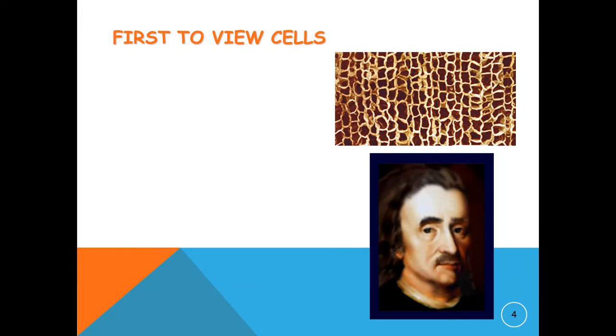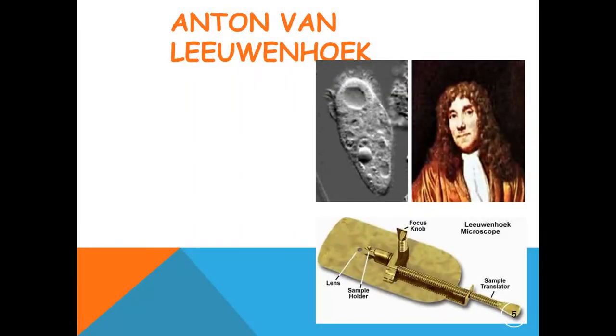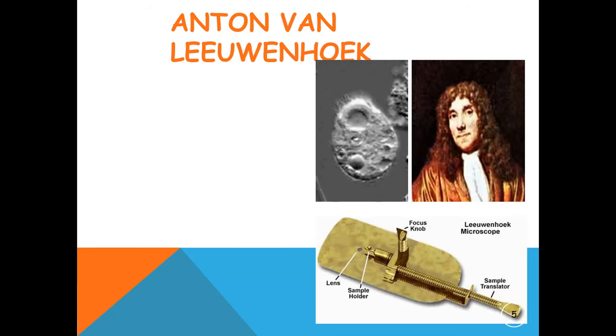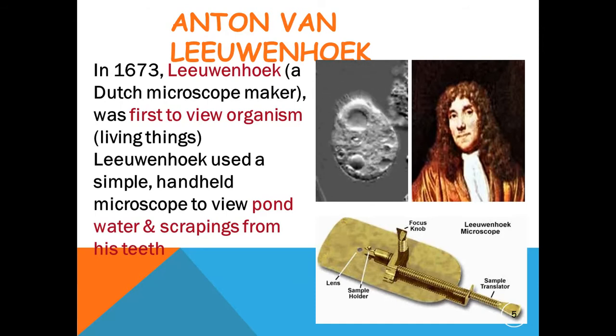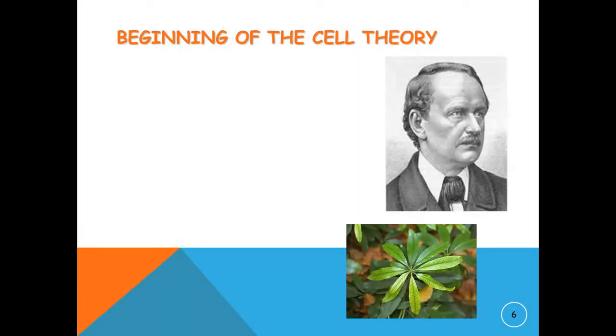Hooke is responsible for naming the small boxes as cells. He called them cells because they looked like the small rooms that monks live in called cells. In 1673, Anton van Leeuwenhoek, a Dutch microscope maker, was the first to view living organisms. He used simple microscopes to view pond water and scrapings from his teeth.